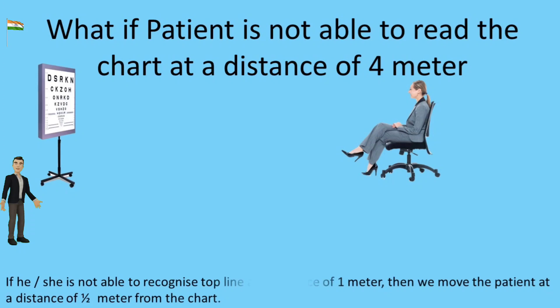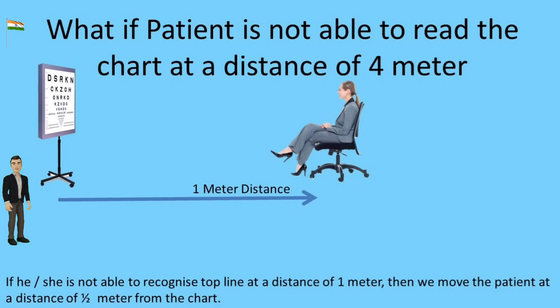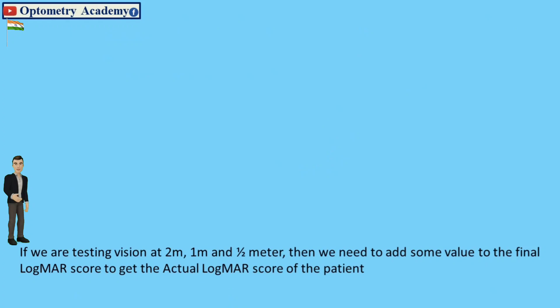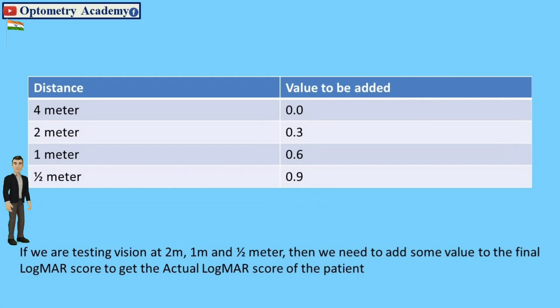If he or she is not able to recognize top line at a distance of 1 meter, then we move the patient at a distance of 1.5 meters from the chart. If we are testing vision at 2 meters, 1 meter and 1.5 meters, then we need to add some value to the final LogMAR score to get the actual LogMAR score of the patient.